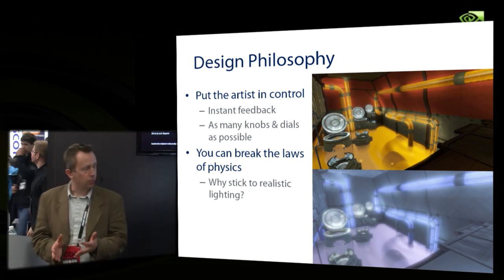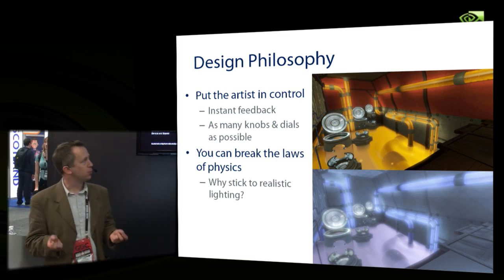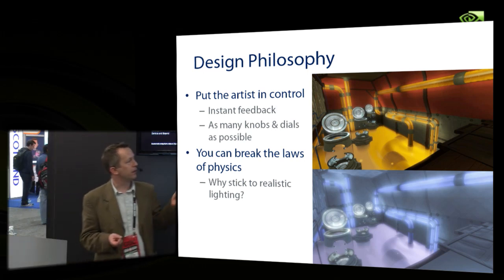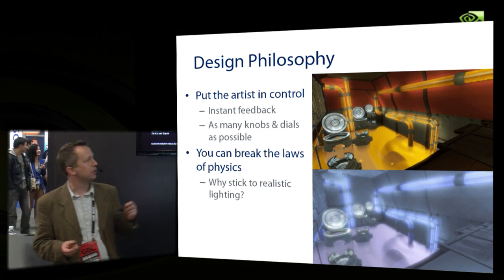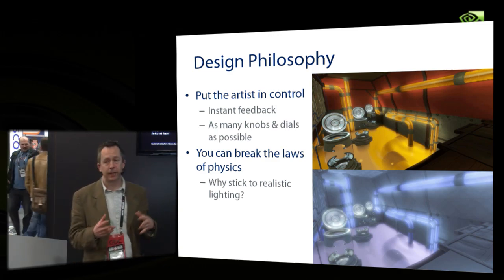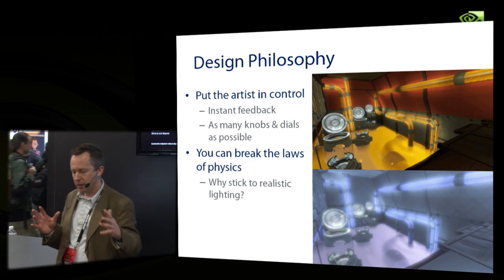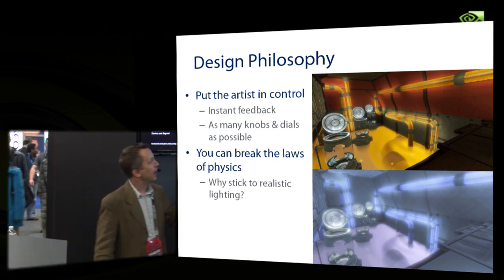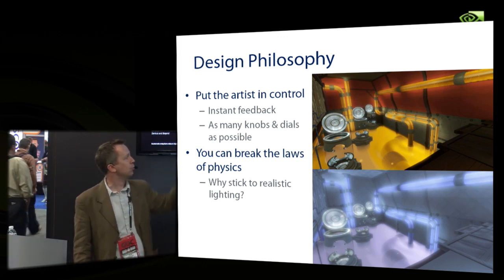The key thing was putting the artist in control. Instant feedback gives artists a lot of ability to tweak things, and we gave them a whole load of controls so they can create any look they like. Things you'd think are physically set can be changed — red walls can bounce light as if they were blue, any surface can become emissive. Quantum Conundrum really pushed that, using Enlighten to create different dimensions with completely different lighting environments, using hidden area lights to create a colorful, overdriven, cartoony look — all fully dynamic.